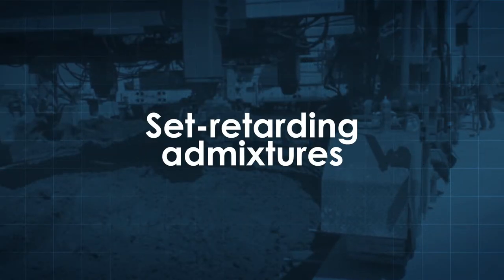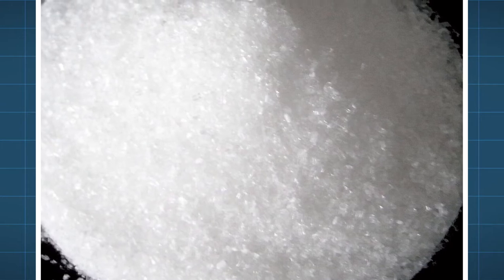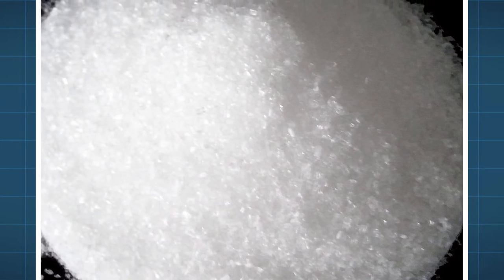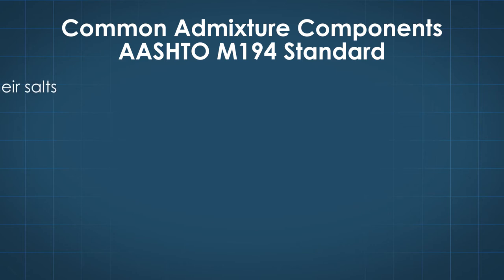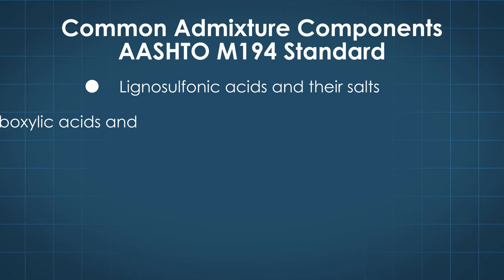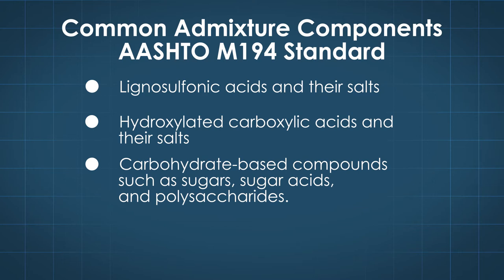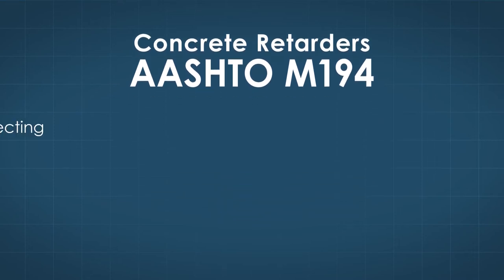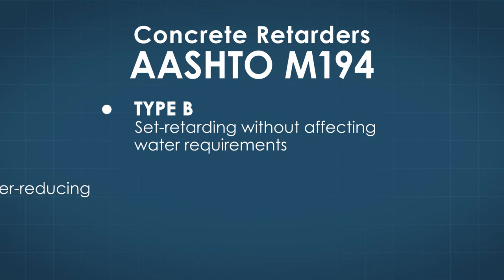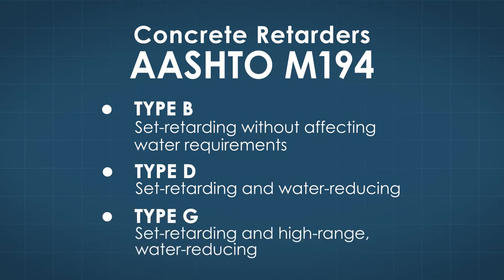Hot weather, delivery delays, or extended transport time may make it necessary to slow down or delay the setting rate of concrete. Set retarding admixtures can help slow down the setting time. Set retarding admixtures follow AASHTO M194 standard and are commonly composed of lignosulfonic acids and their salts, carbohydrate-based compounds such as sugars, sugar acids, and polysaccharides, and inorganic salts such as borates and phosphates. Retarders are specified under AASHTO M194 as Type B (set retarding without affecting water requirements), Type D (set retarding and water reducing), and Type G (set retarding and high range water reducing).